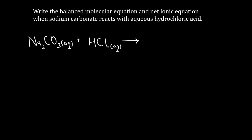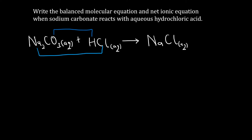What happens is a switch of radicals or ions. Sodium takes the chloride ions, forming sodium chloride (aqueous, because it is soluble in water), while hydrogen pairs with the carbonate ions. When hydrogen reacts with carbonate, carbonic acid is formed — that is, hydrogen ions with carbonate ions produce carbonic acid, which is a weak acid.